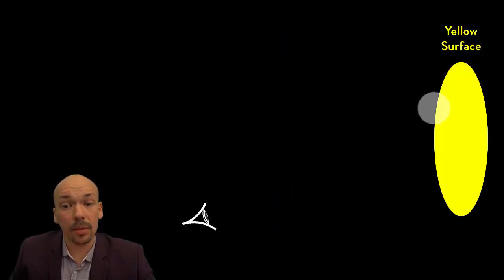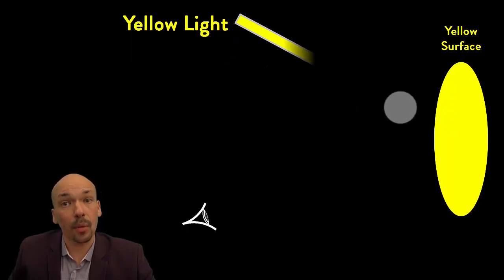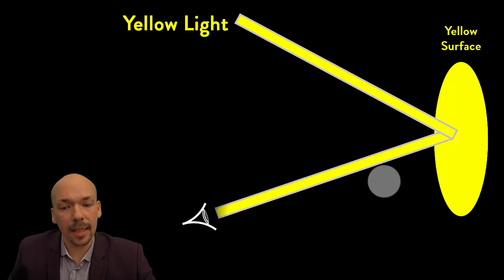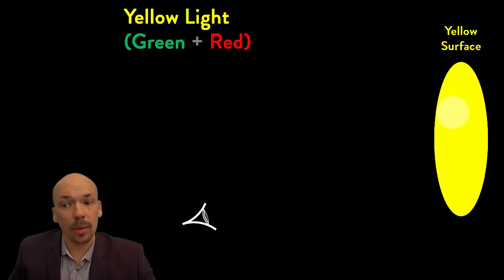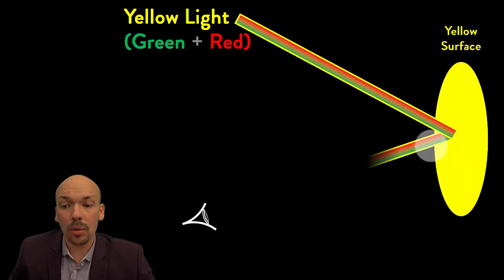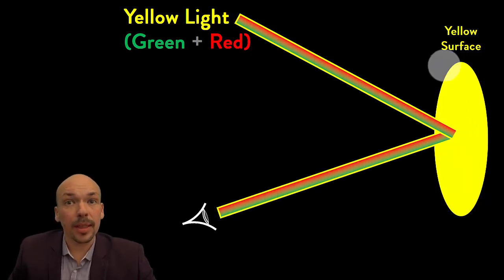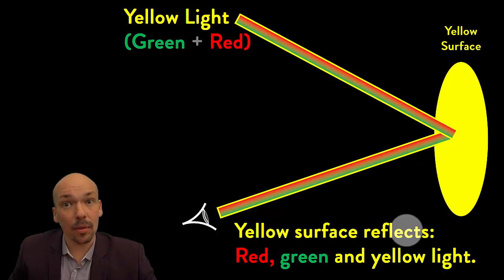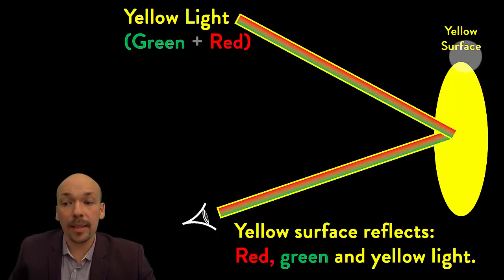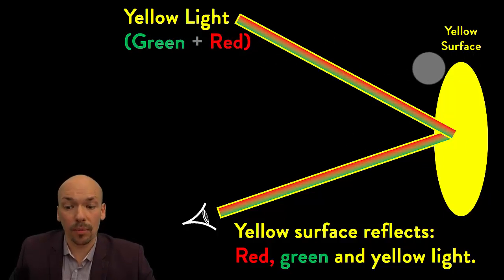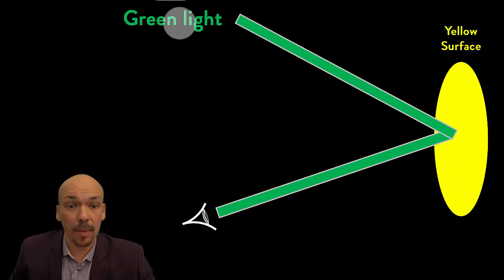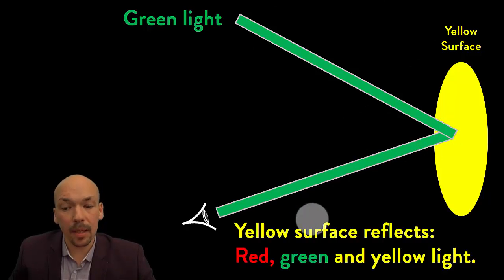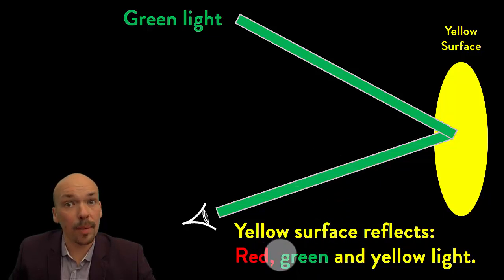The same for a yellow surface. If we shine pure yellow light on it, then of course it can be reflected, and we will see it as yellow because the yellow surface can reflect yellow light. If we have yellow light which is green and red and we put it on the yellow surface, then we will see that it will also reflect those two. Because the yellow surface is a secondary color, so it can not only reflect its own color, but also the red and green. Yellow surfaces reflect red, green, and yellow — the two primary colors and its own color.